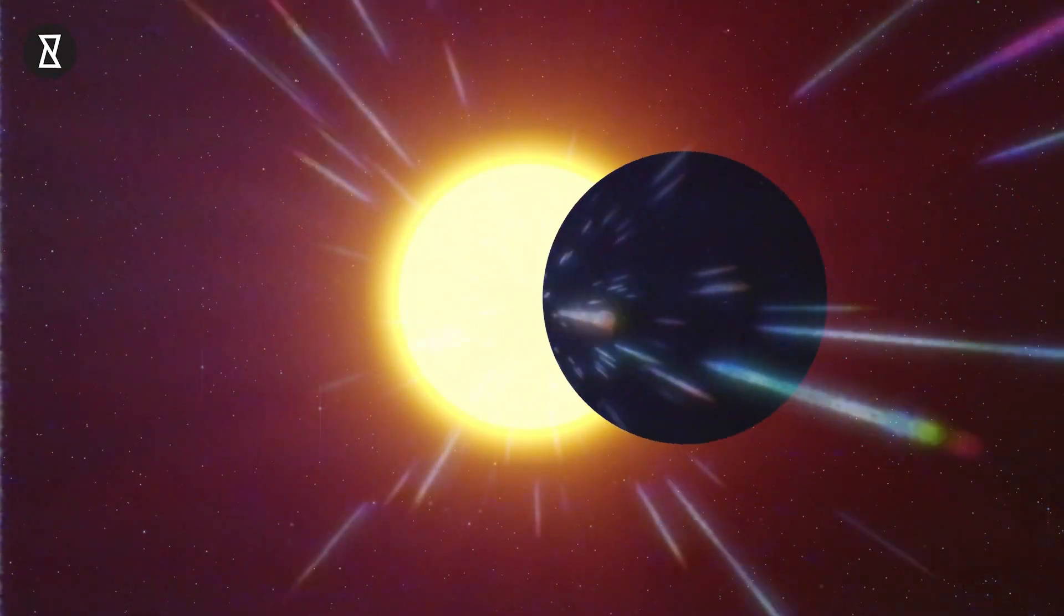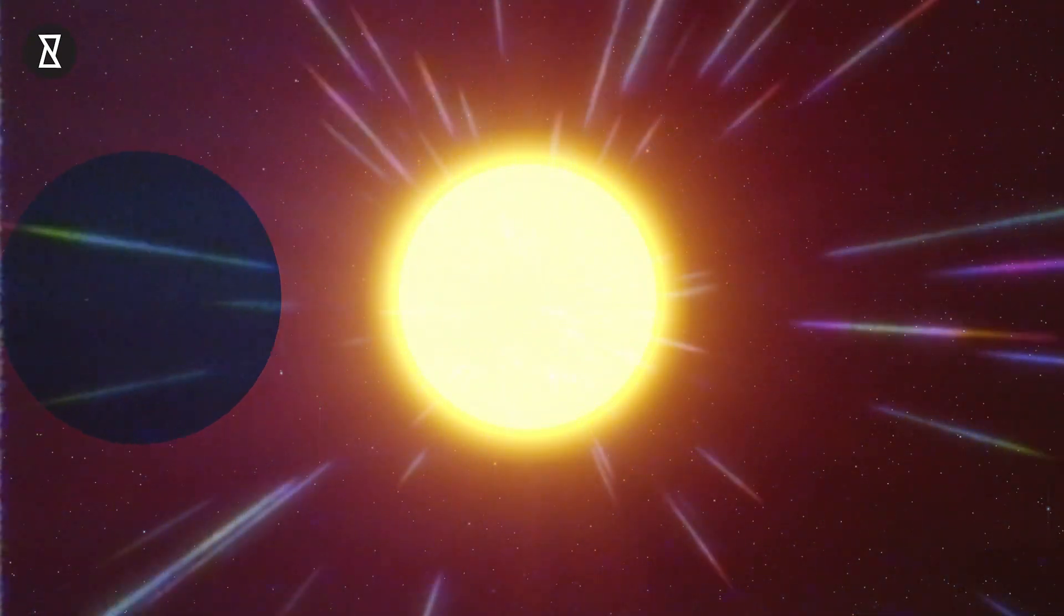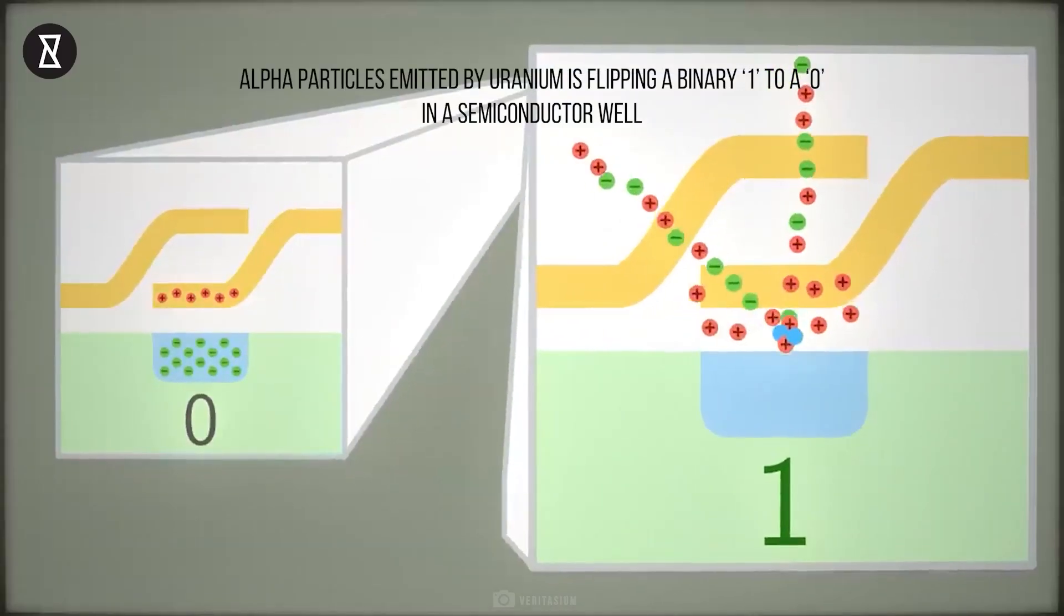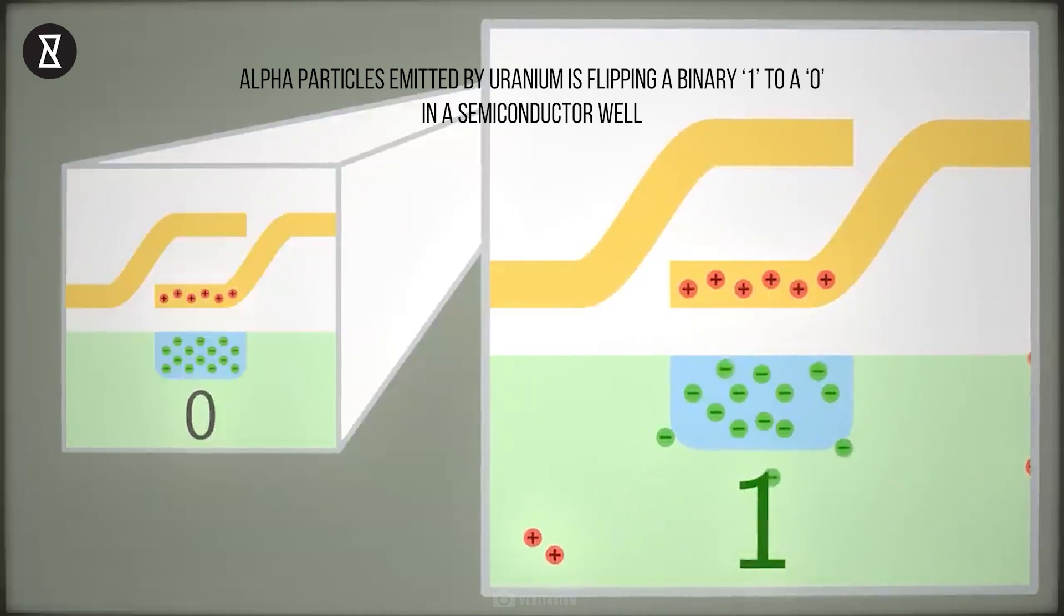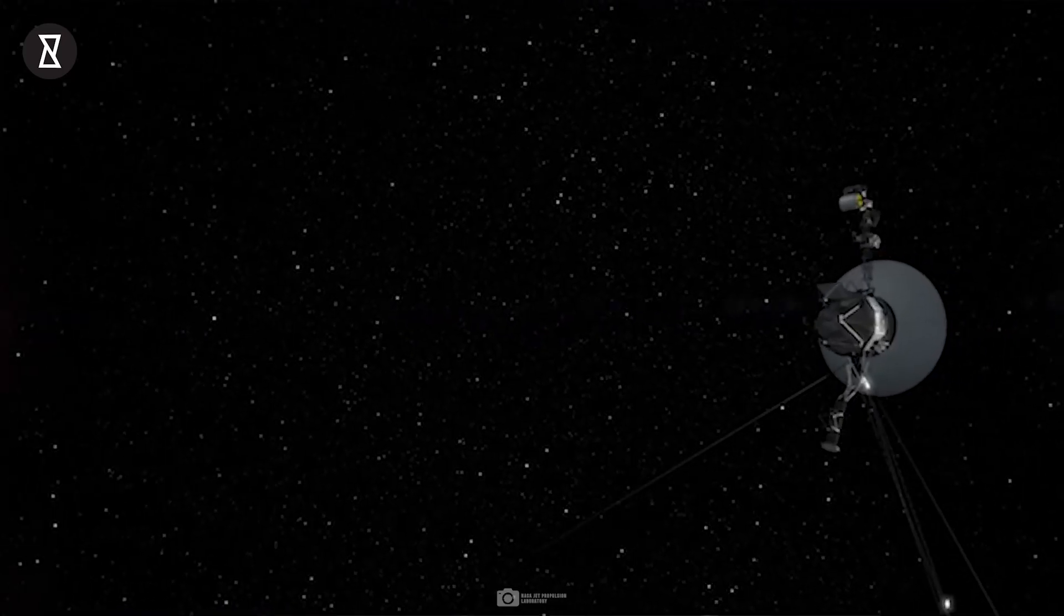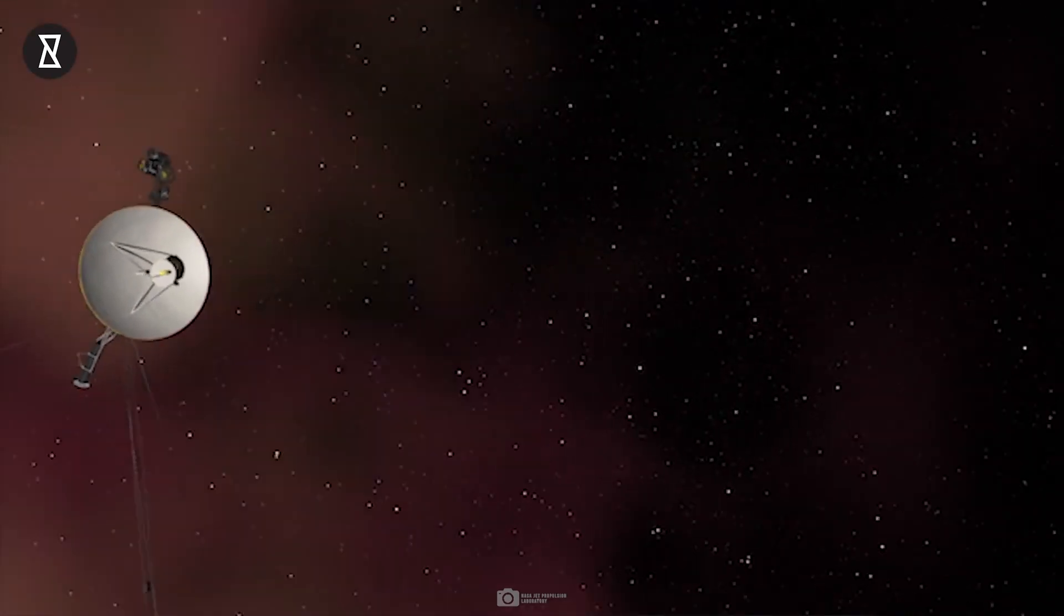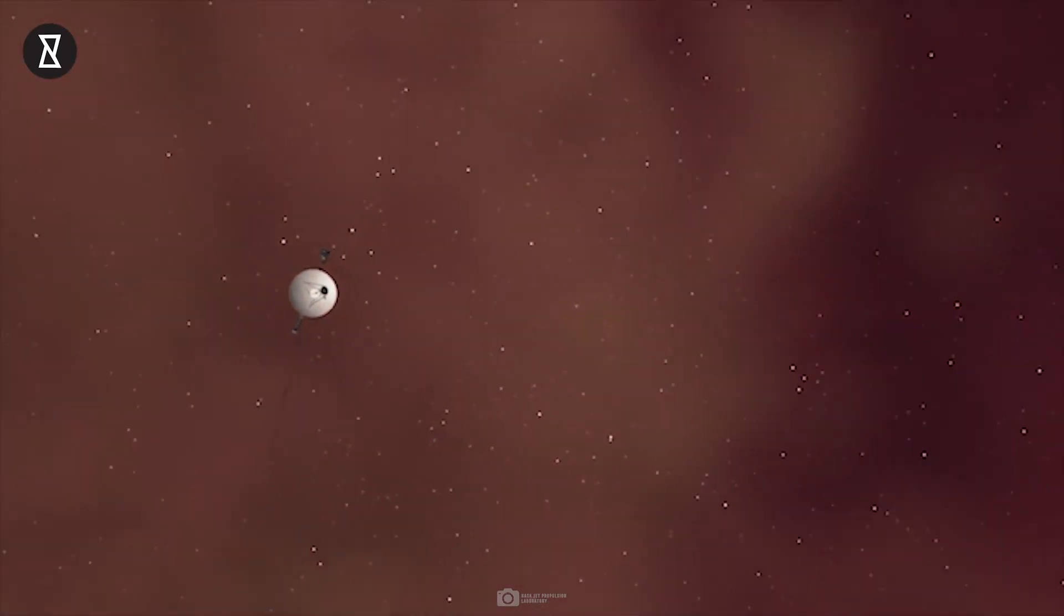Cosmic rays are known to interfere with electronics here on Earth. When one of those high-speed energetic particles strikes a computer chip, it can cause small memory errors which add up over time, and it's reasonable to expect that to be an issue for Voyager 1's onboard computers too.